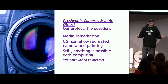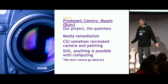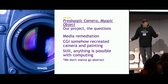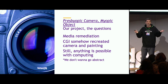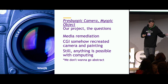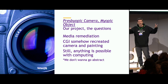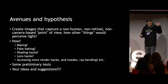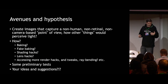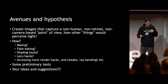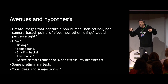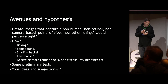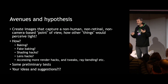The funny thing is: why? You know, it's a computer — we could do a funny, non-existing camera. So that's the goal with the project. We want to explore new points of view, but we don't necessarily want to go abstract like processing or whatever. We still want to use CGI to do other points of view. The goal is to create images that would capture a non-human, or non-original, or non-camera-based point of view. The question would be: how would other things perceive light and create image based on that?